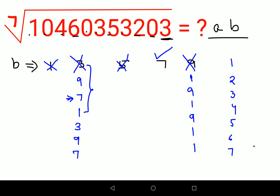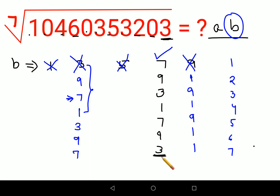By elimination, 7 must be the answer for b. Let's verify: 7^1=7, 7^2=49 (last digit 9), 7^3=343 (last digit 3), 7^4 ends in 1, then the cycle continues — 7, 9, 3, 1. So 7^7 gives a last digit of 3, which is exactly what we wanted. Therefore, the value of b is 7.